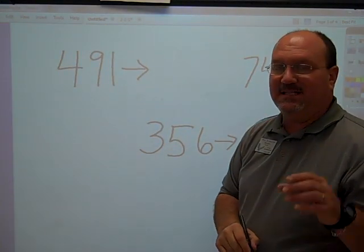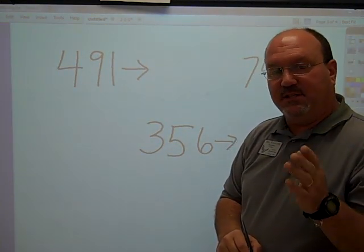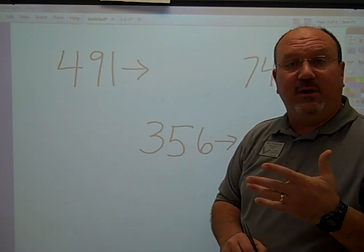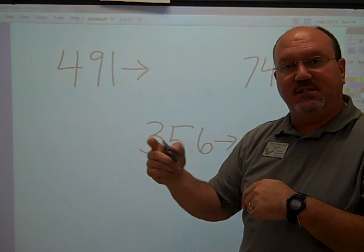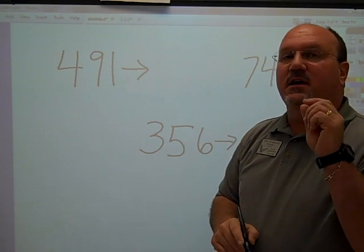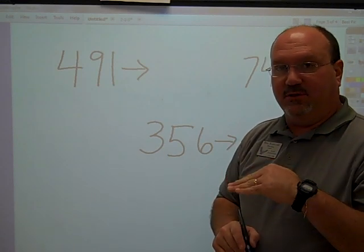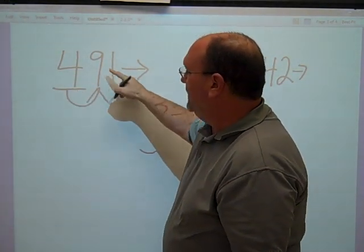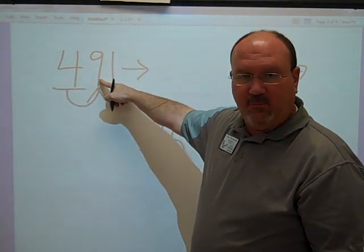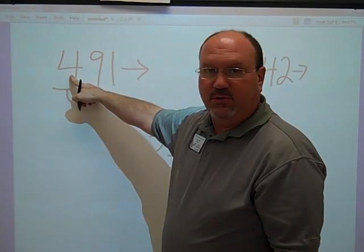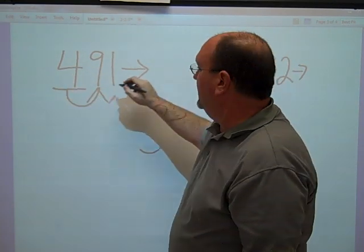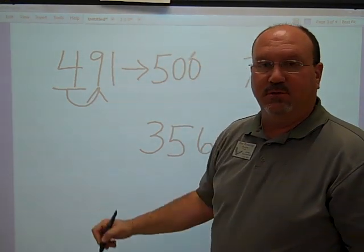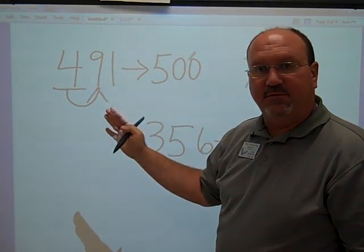Underline the hundreds, look next door. If it's five or bigger, add one more to the digit that you underlined. Everything after is a zero to the core. Underline the hundreds, look next door. If it's five or bigger — and nine is certainly bigger than five — add one more to the hundreds column that we've underlined. Everything after is zero to the core. So we've rounded 491 to 500.